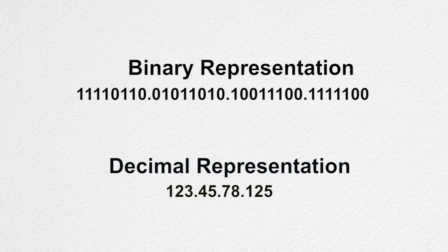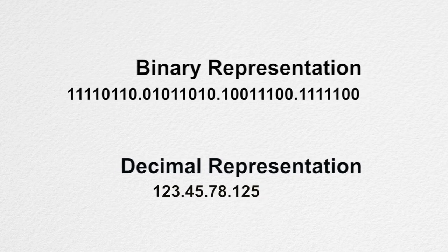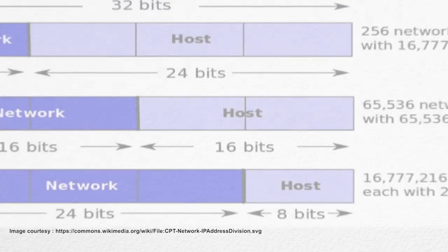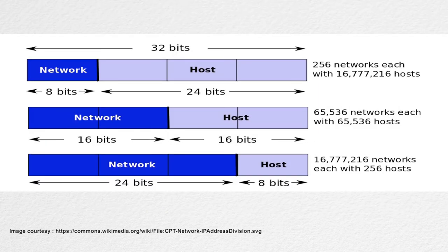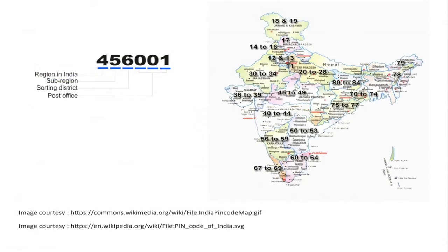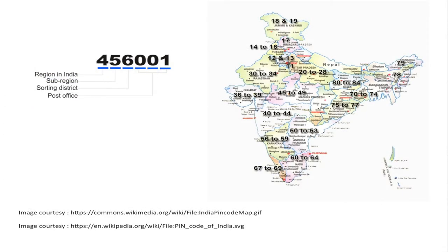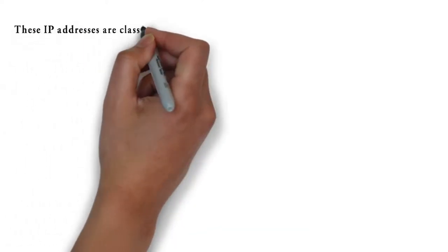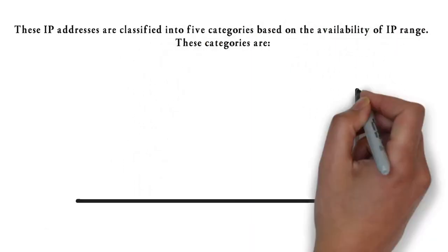These octets are used to create and separate different classes. An IP address consists of 2 parts: network and host. The network part identifies a particular network among different networks, and the host part identifies a device within a particular network. This address uniquely identifies a device connected to the internet. Similar to the postal system, where we identify any house by first identifying the country, then state, followed by district, post office, cluster or block, and finally the house number.